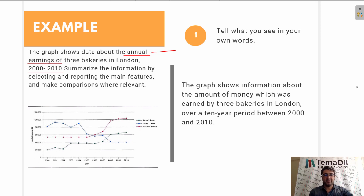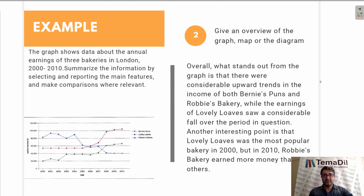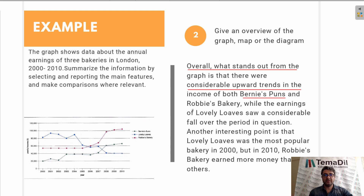As we are done with the first part of our writing, we can move on to the second one. In the second section, I'm talking about the general trend. The general trend here is that two bakeries increased their profits, whereas one bakery lost money in that period. So what stands out from the graph is that there were considerable upward trends in income for two bakeries, whereas one was losing money. This is the general overview of what we see in the task.